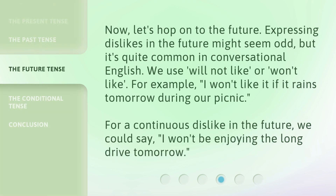Now let's hop on to the future. Expressing dislikes in the future might seem odd, but it's quite common in conversational English. We use 'will not like' or 'won't like'. For example, 'I won't like it if it rains tomorrow during our picnic.' For a continuous dislike in the future, we could say, 'I won't be enjoying the long drive tomorrow.'